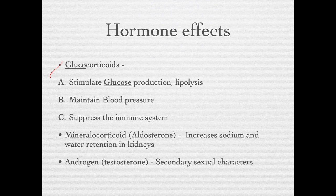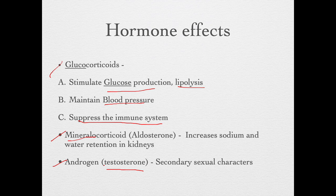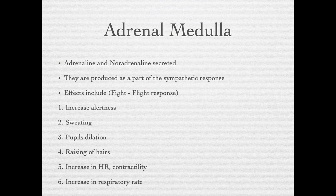The first adrenal cortex hormone is the glucocorticoid. It stimulates glucose production and lipolysis, maintains blood pressure, and suppresses the immune system. This last function is important because steroidal drugs are given for conditions requiring immune suppression, most recently in the treatment of COVID-19. Mineralocorticoids increase sodium and water retention in the kidneys. Androgens, which include testosterone, help develop secondary sexual characters in males.